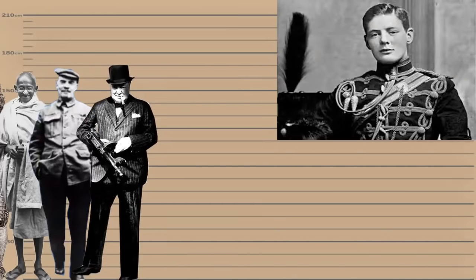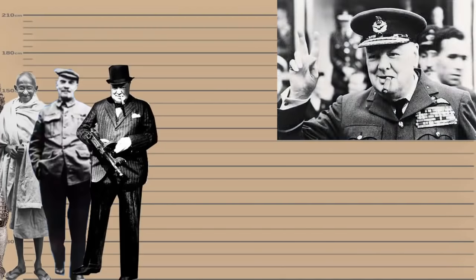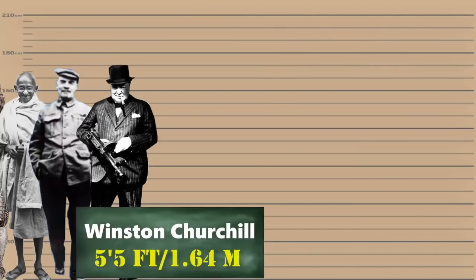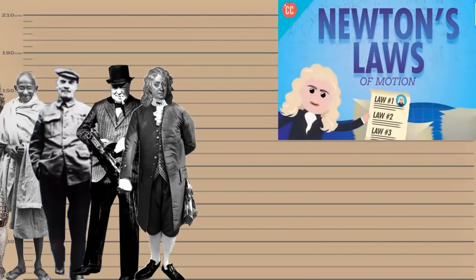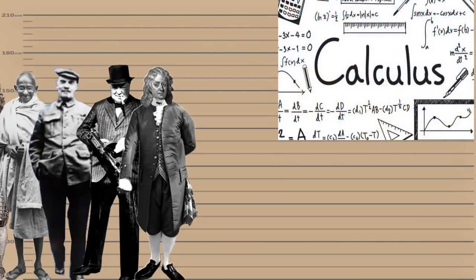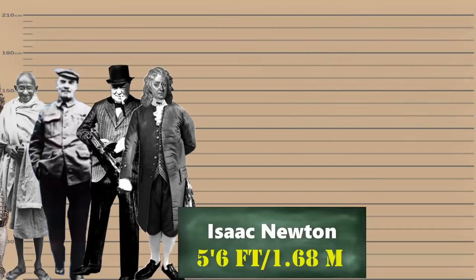The British statesman, orator and author who was a prime minister that rallied the British people during World War II and led his country from the brink of defeat to victory — Winston Churchill was about 5 feet 5 inches. Next up we have one of the most important men in math and science history, the culminating figure of the scientific revolution of the 17th century, the father of calculus and gravity — Sir Isaac Newton was 5 feet 6 inches tall.